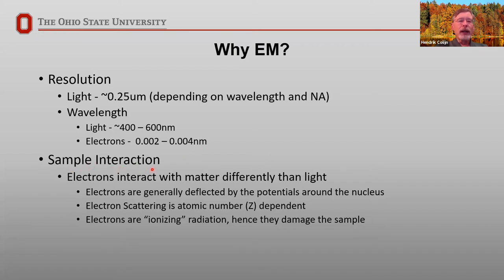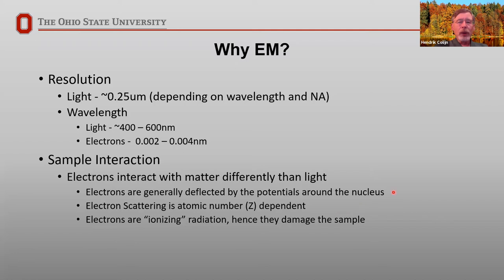There's also a difference in the way electrons interact with materials. Electrons are deflected by the potentials around the nucleus, meaning scattering is very strongly dependent on atomic number Z. For example, atoms like uranium, osmium, and lead will scatter electrons much more to higher angles than elements like carbon or oxygen — we make use of that when imaging samples. Additionally, electrons are ionizing radiation: we can use that to help identify elements, but they will also damage the sample through radiolysis, sputtering, and other effects, which is particularly an issue in the biological community.